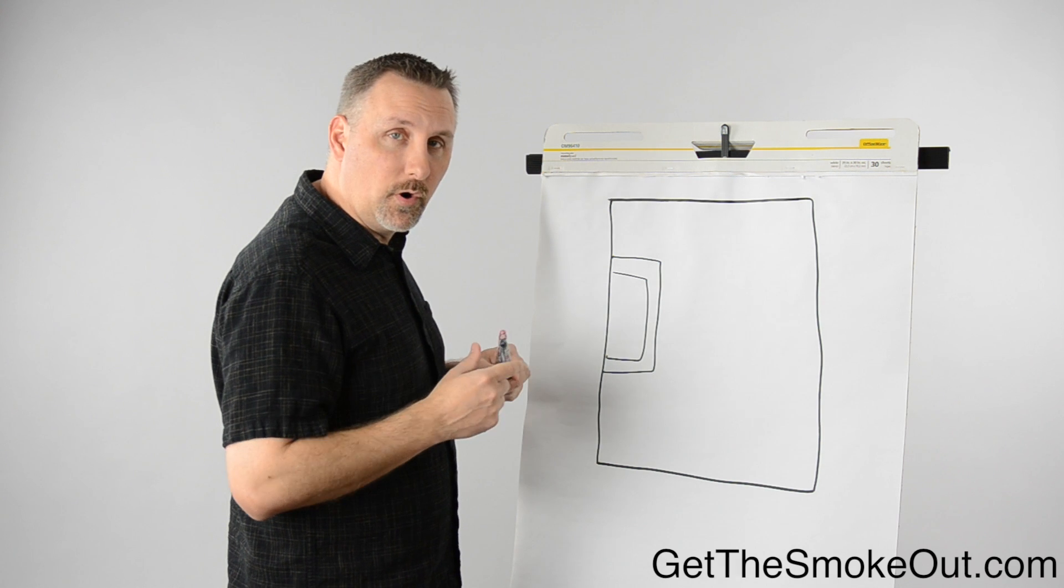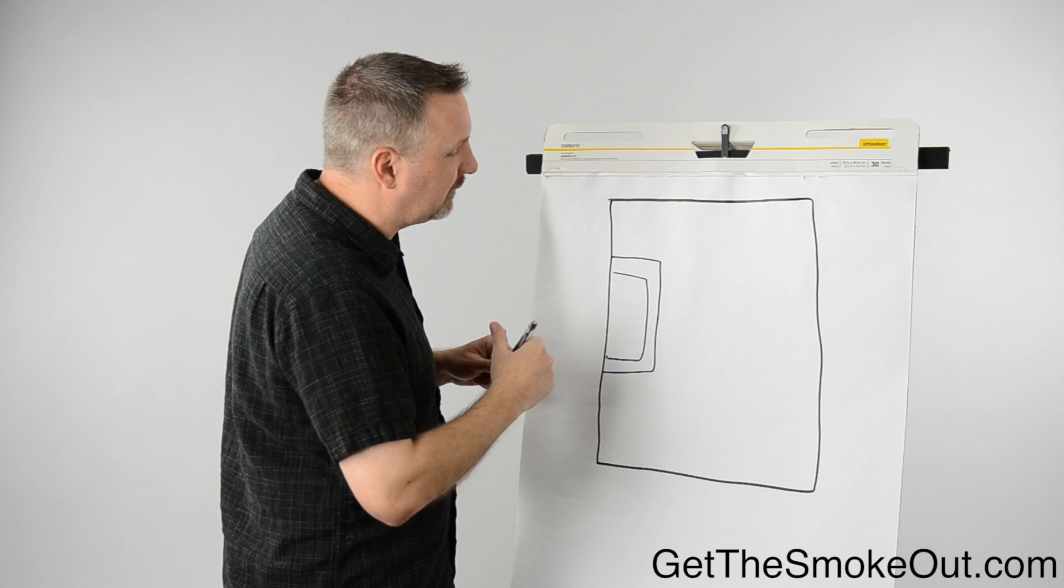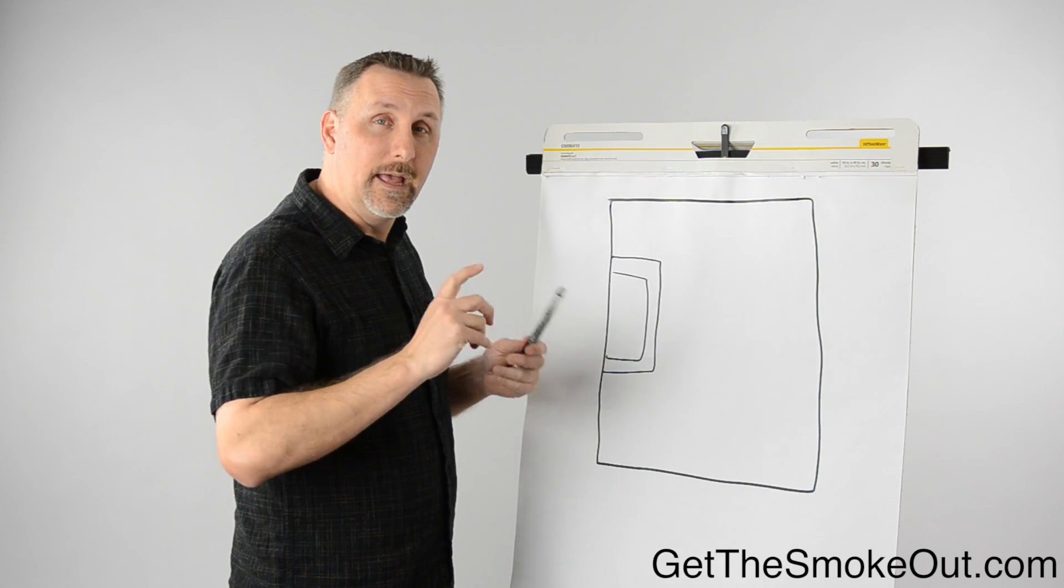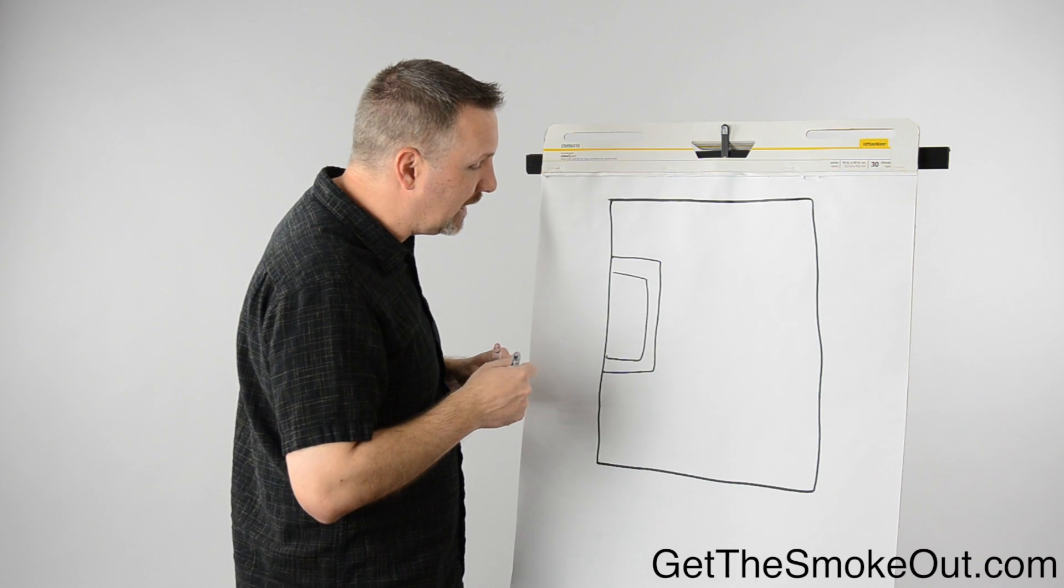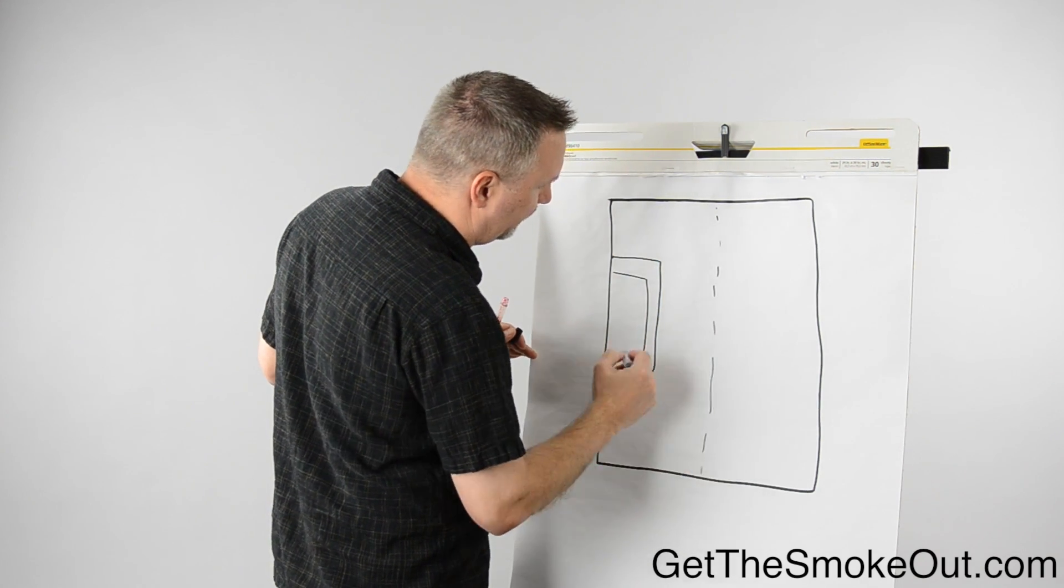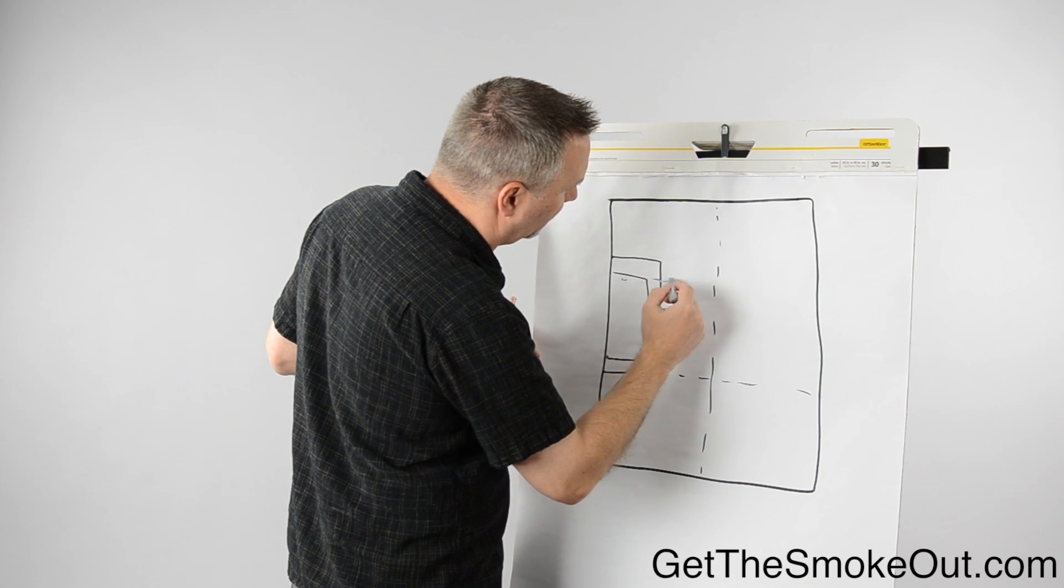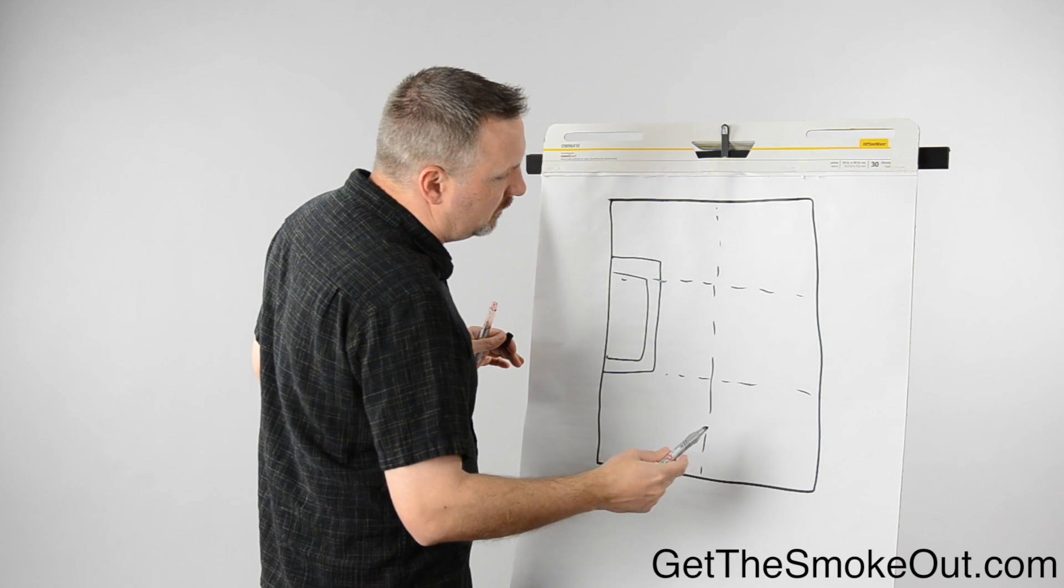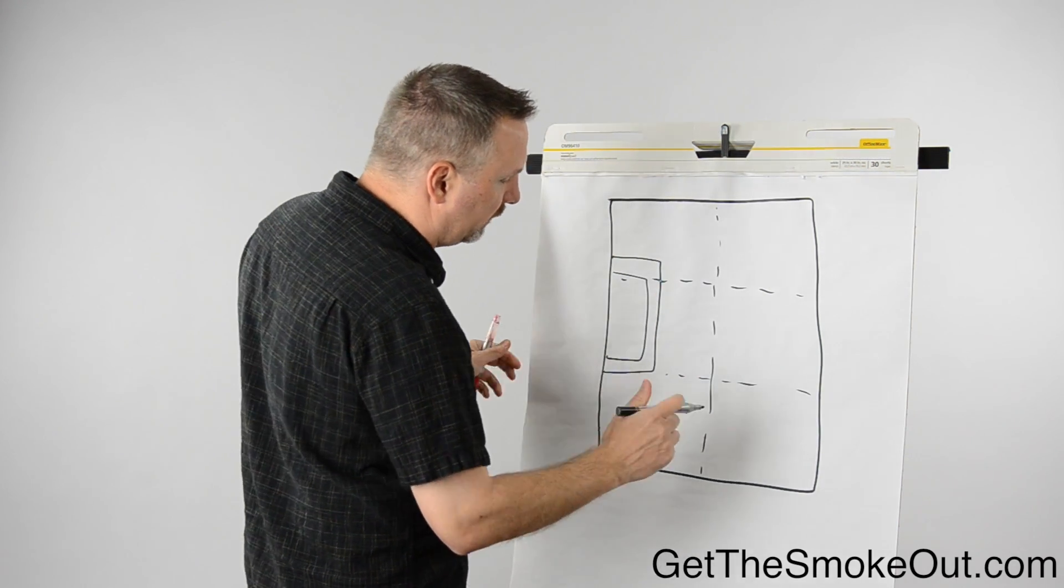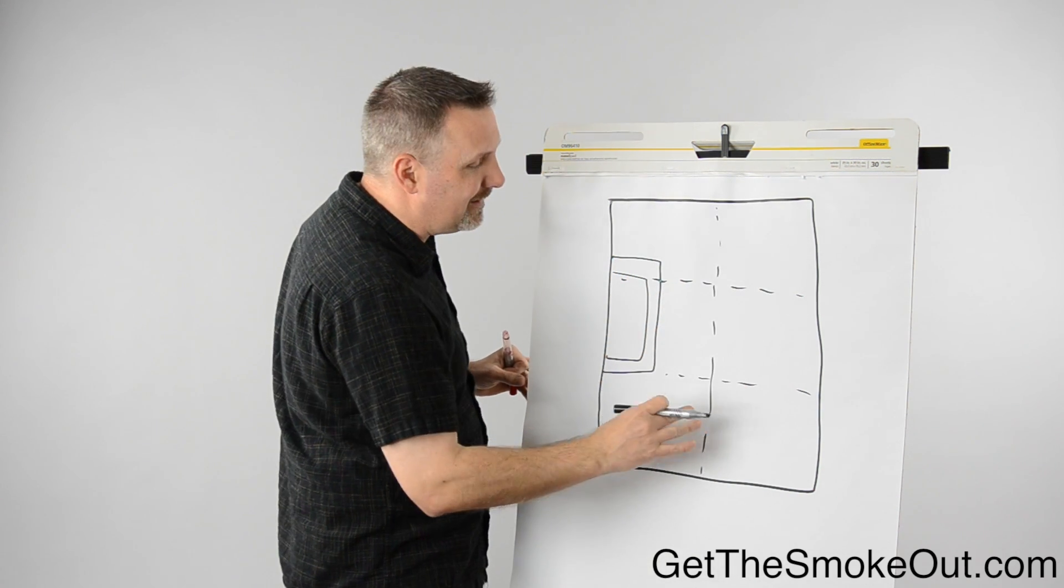My approach to handling the smoke in a place like this would be to evenly space them out, stagger them a little bit, and alternate the airflow. Let me show you what that looks like. If you've got the room, kind of divide it up a little bit. You've got really six quadrants here.